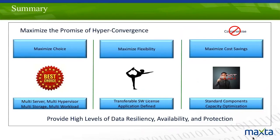In summary, what does Maxta provide to customers? First and foremost, it provides the choice customers are looking for in a software-defined model: the ability to run on standard x86 servers and use multiple hypervisors. It gives them flexibility — the ability to use different servers, transfer software licenses, and set properties at an application level. And at the end, it delivers cost efficiency to end customers, all with no compromises to data availability, data reliability, and data protection. Last but not least is the partnership and time-to-market of next-generation technology from both hardware and software across the overall ecosystem.